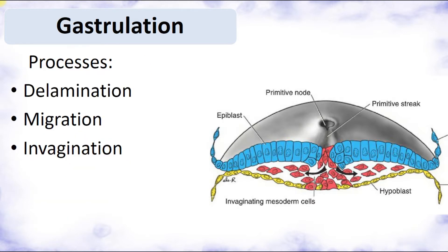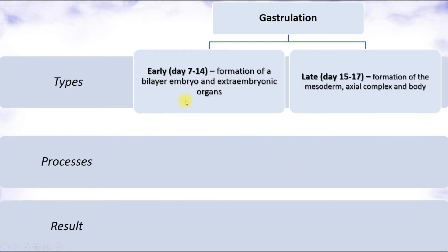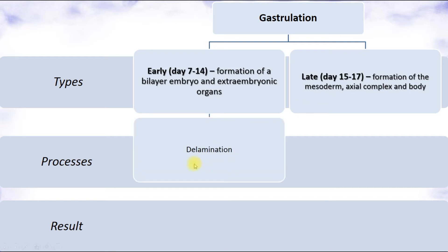Early gastrulation includes processes of delamination, migration, and invagination. Looking at this diagram, early gastrulation takes place during the second week, from day 7 to day 14, and results in formation of the bilayer embryo and extra-embryonic organs. Late gastrulation occurs in the third week beginning day 15, and includes formation of mesoderm, the axial complex, and the body of the embryo.